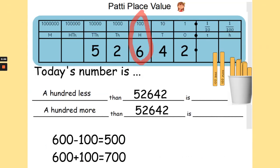Okay, let's see how we got on. So we were looking at finding 100 less and 100 more of this number. So I've circled the hundreds column. In our hundreds column is 6, which is 600. So to find 100 less, we do 600 take away 100, which gives us 500. And 600 add 100 to find 100 more, which gives us 700.